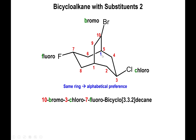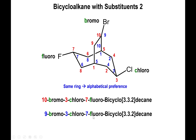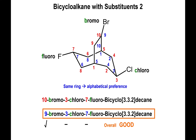For the blue scheme, starting from the other bridgehead, we again go toward the longest chain with alphabetical priority — chloro — so we go right until reaching the second bridgehead at five, then onto the second ring up to carbon eight. Since this is on the back, carbon nine is also on the back, and carbon ten follows. The numbering becomes: nine-bromo, three-chloro, seven-fluoro. Comparing schemes: seven turning into nine is bad for blue; three stays three — neutral; seven stays seven — neutral. So we have one good outcome for blue overall, meaning the blue scheme wins, and we use the blue numbering.